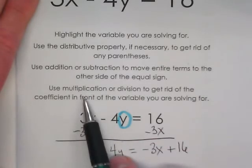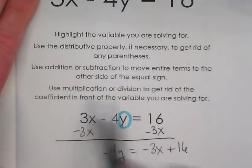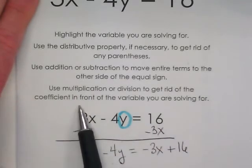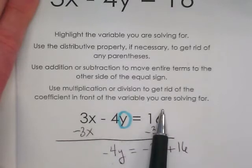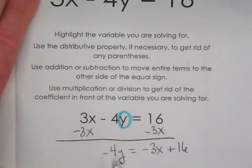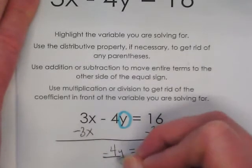Okay. Now we're at a place for the last step. Use multiplication or division to get rid of the coefficient in front of the variable you're solving for. The variable we're solving for is y. What's the coefficient in front of it? Negative 4. So we're going to use division.